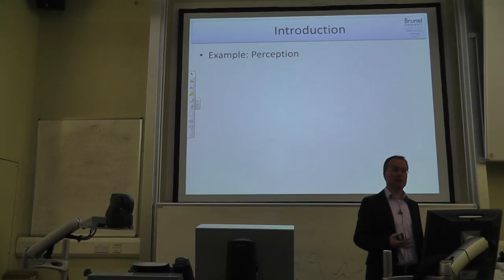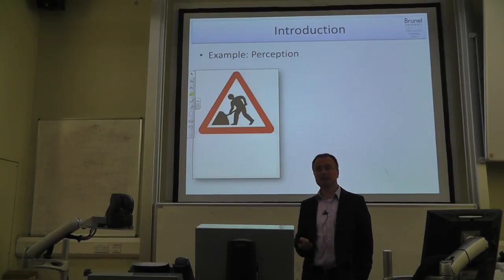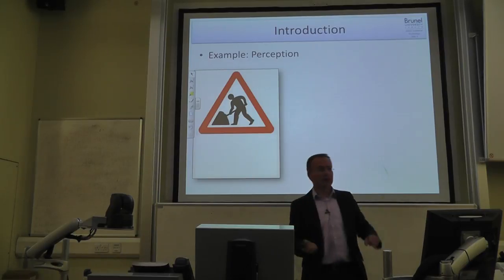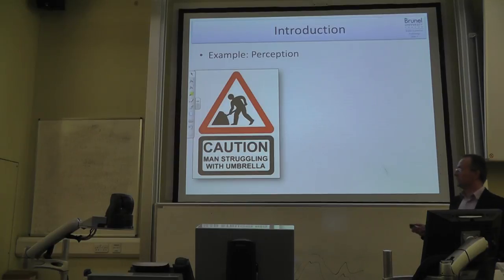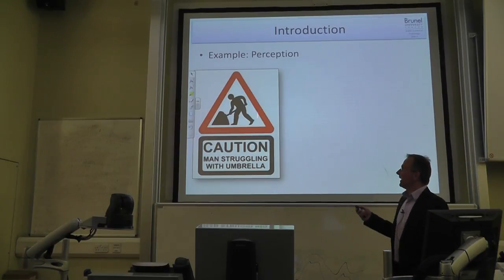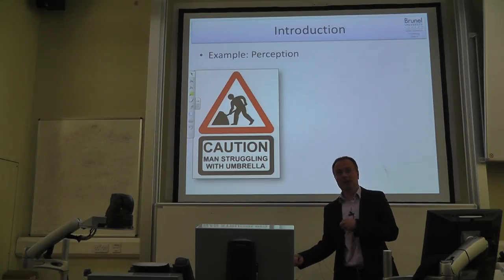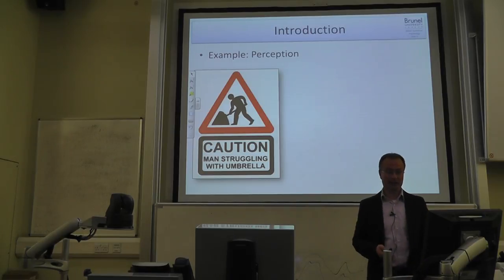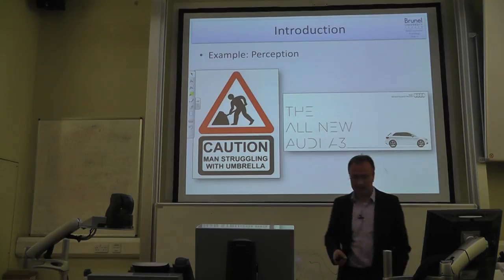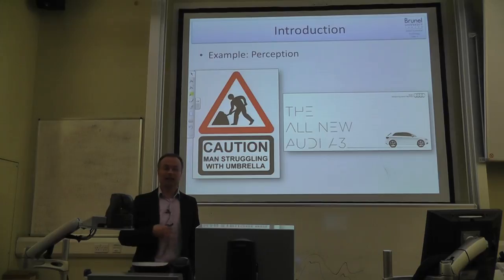Let's look at examples of what cognitive psychology deals with. An example from perception: most of you know the road works traffic sign — this guy is shoveling something. But the caption 'caution: man struggling with umbrella' causes the percept to change for most people. How can perception be influenced top-down by prior knowledge, concepts, and context? Or how can we read text with missing letter information? These are real examples from next year's lecture.